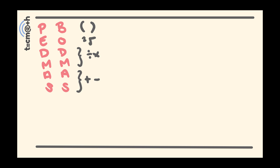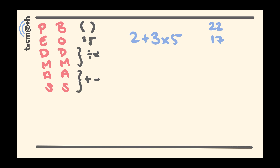Now let's look at the final two rules — doing division and multiplication before addition and subtraction. Going back to our first example, 2 plus 3 times 5: we have addition and multiplication. According to PEMDAS/BODMAS, we do multiplication first. 3 times 5 is 15, leaving us with 2 plus 15, which equals 17. So the correct answer was 17.